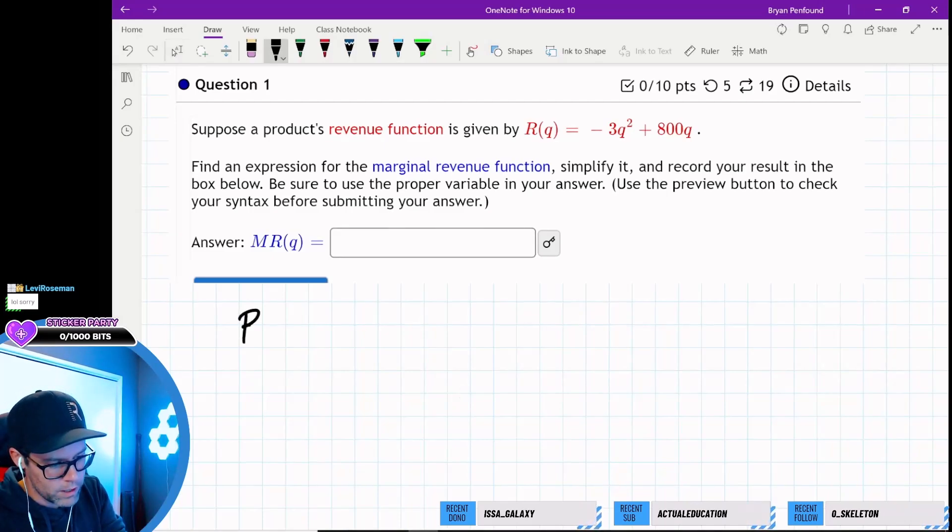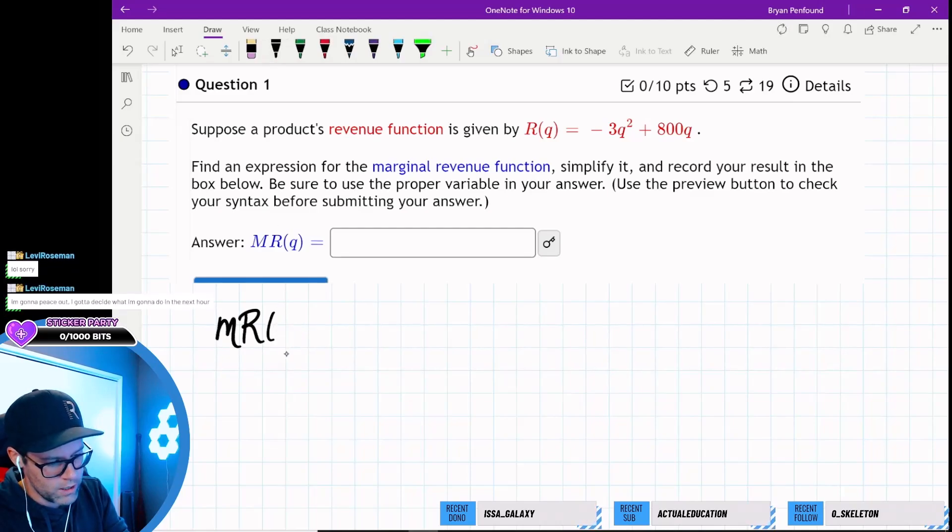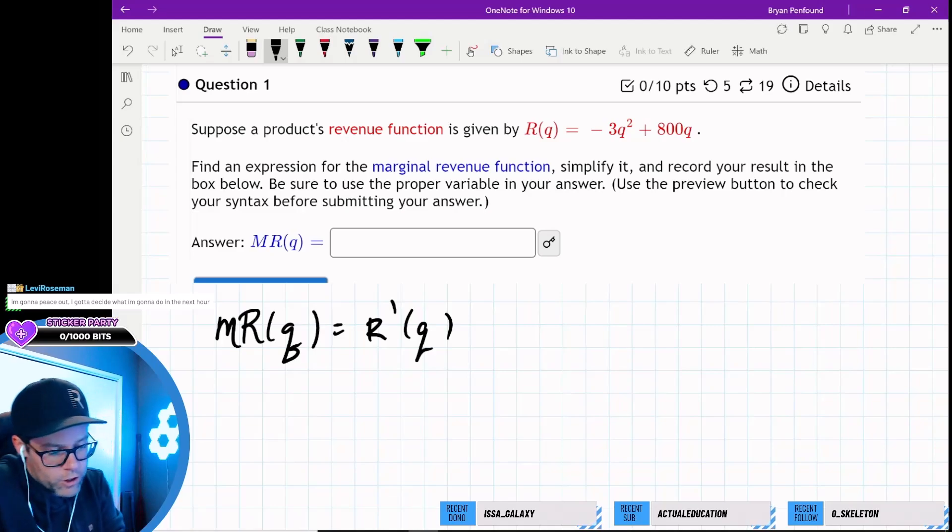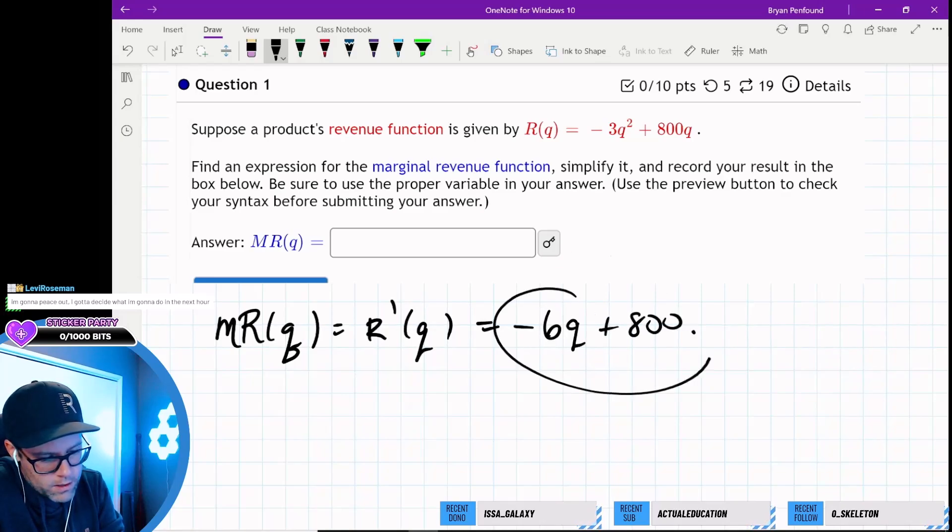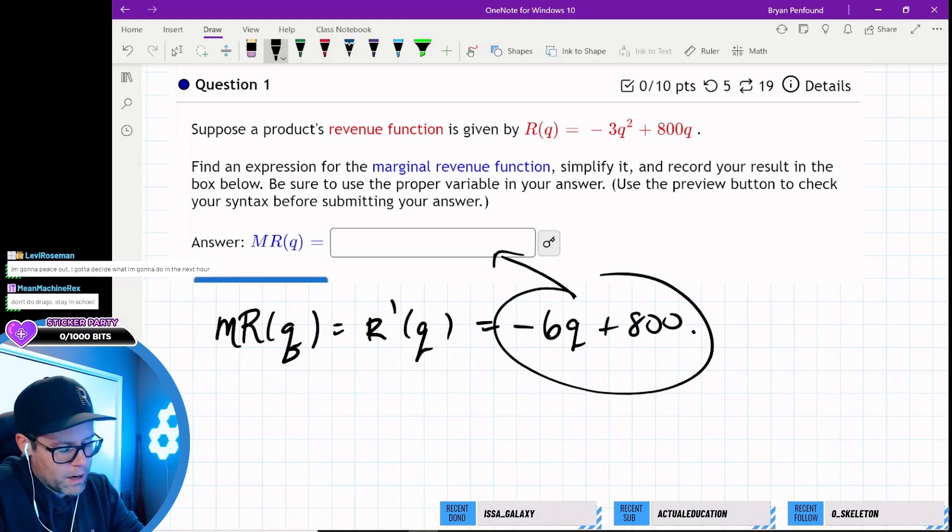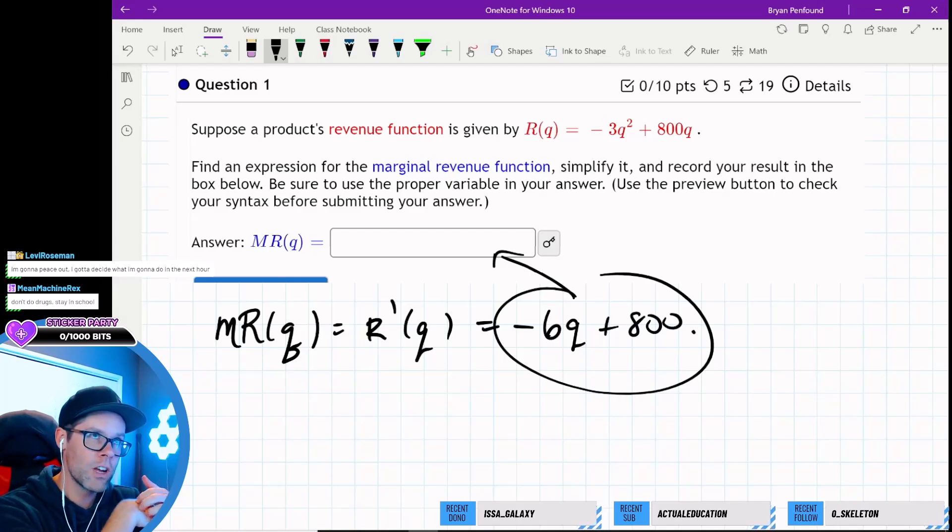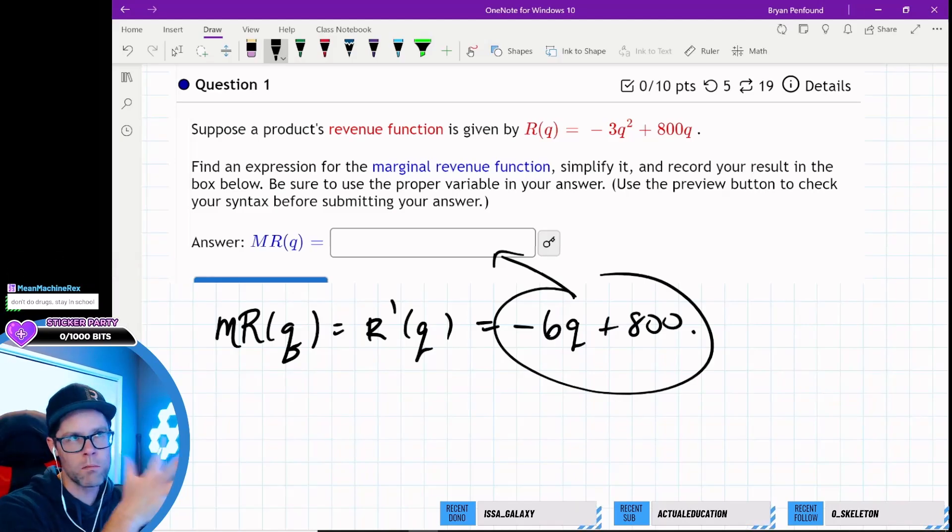So the marginal revenue is the derivative. The marginal revenue with respect to q, that's a g, not a q, with respect to q, should be the revenue function. We take the derivative of that revenue function. Here we should be able to use the power law: negative 6q plus 800. So this expression here is what we want inside the box for the marginal revenue. The marginal revenue always gives us a general sense of like, if I add one more item, what the revenue is going to look like by adding one more item.